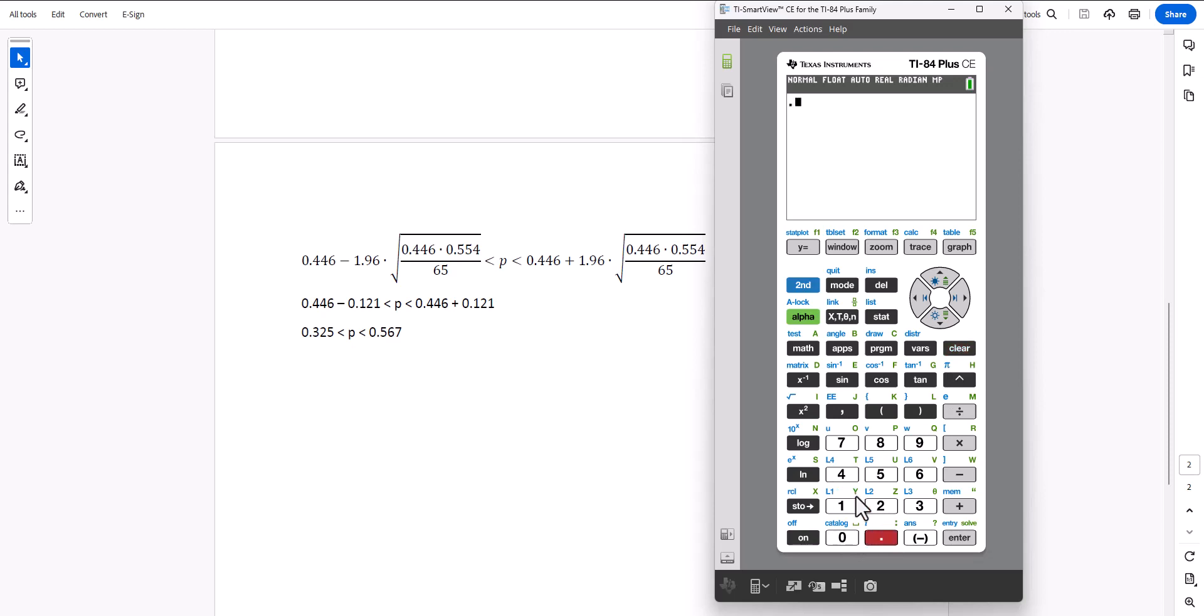So we have 0.446 minus 1.96 times the square root, 0.446 times 0.554. Now we move up to 64, divide by 65, hit enter. 0.325, that's our left limit.